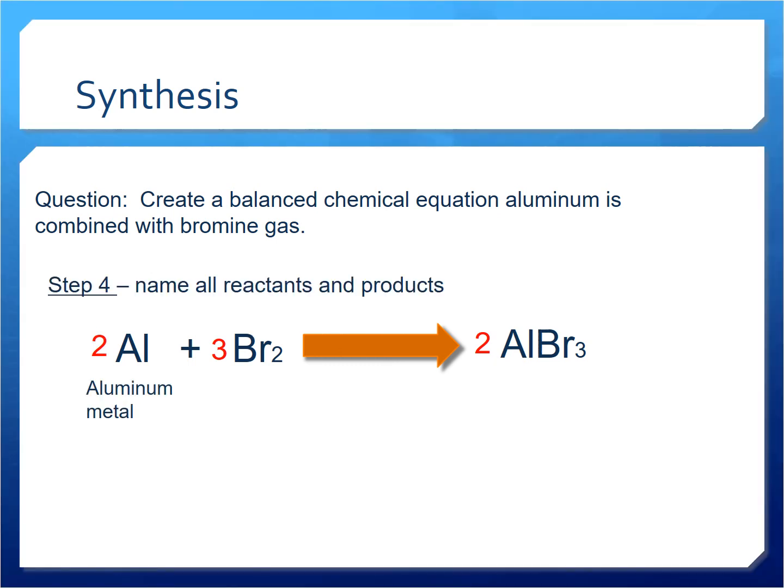Lastly, we'll name everything aluminum metal, bromine gas, and aluminum bromide. Thank you for watching.